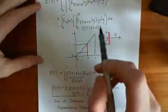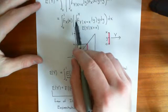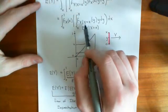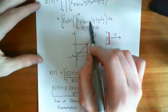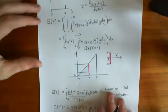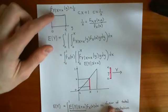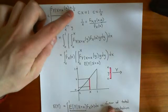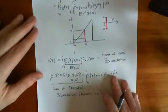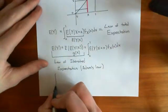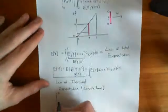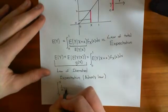The first thing to do is calculate the expected value of Y given that X equals little x. That is equal to the integral from 0 to x of the conditional probability density function that Y equals little y, given that X equals little x, times that value of y. We said that the conditional PDF of Y given X equals little x is 1 over x. So we substitute in 1 over x and perform that integral.